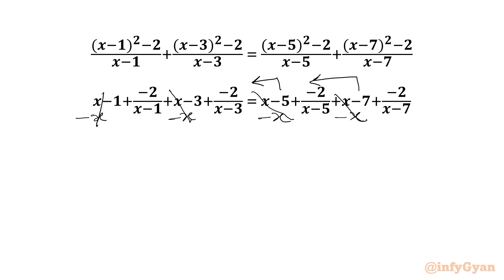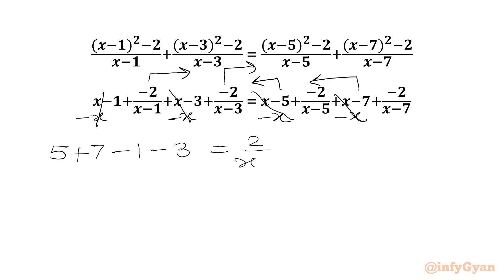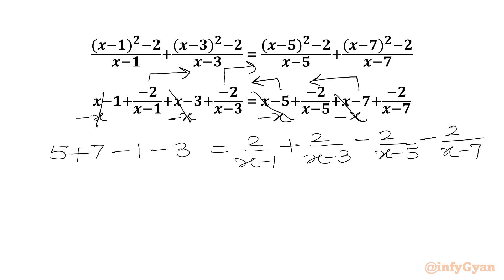So on the LHS we get 5 plus 7 minus 1 minus 3, and the variable terms go to the RHS: 2 over (x minus 1) plus 2 over (x minus 3) minus 2 over (x minus 5) minus 2 over (x minus 7). Now 5 plus 7 is 12, minus 1 minus 3 is minus 4, so 12 minus 4 is 8.